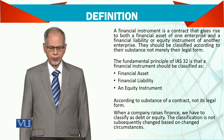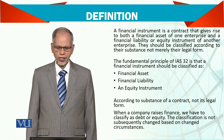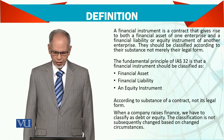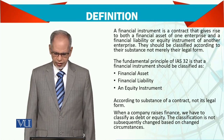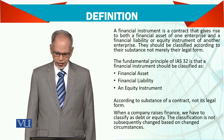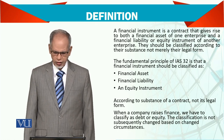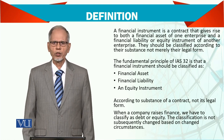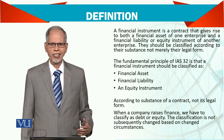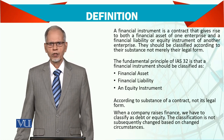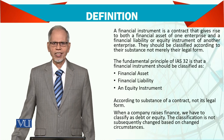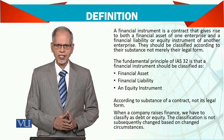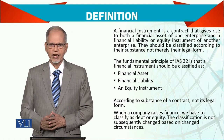Now the definition. A financial instrument is a contract that gives rise to both a financial asset of one enterprise and a financial liability or equity instrument to another enterprise. A very simple example: when you sell something, you create a receivable. But the other party who is buying from you will create a liability — accounts payable. So one party is creating an asset, and the other party is creating a liability.